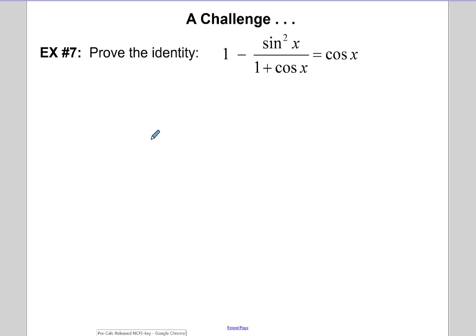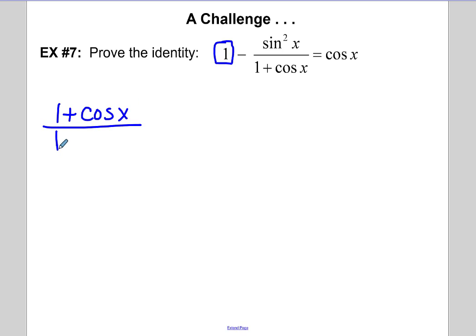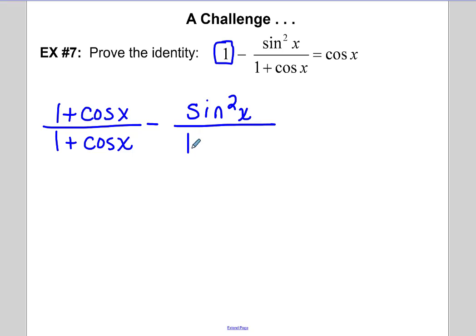Example 7 is a little tougher. The left side is the more complicated side. I'm going to rewrite — I've got a 1 here, so I could rewrite that 1 as 1 plus cosine over 1 plus cosine, because any number divided by itself is 1. That way we've cleverly gotten a common denominator of 1 plus cosine.